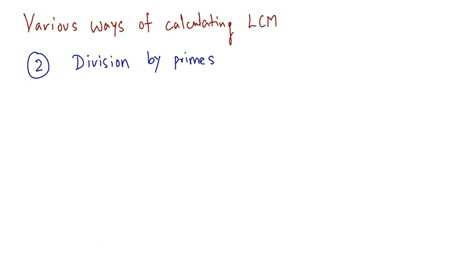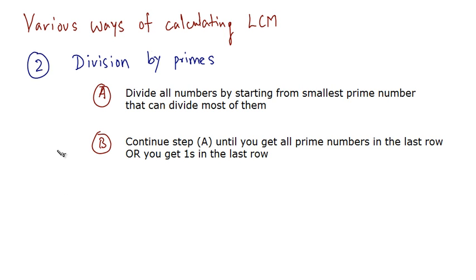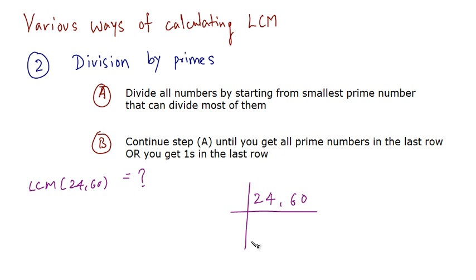Along with this, there is another method of calculating LCM — it is done by dividing the numbers by prime numbers. Let's follow these steps and find out the LCM of 24 and 60. We write the numbers 24 and 60 like this, then we keep on dividing by the smallest prime numbers that can divide both of them. Starting with 2: dividing 24 by 2 gives 12, and 60 by 2 gives 30.